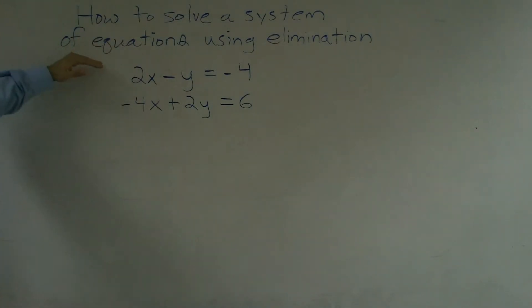All right, what I'd like to show you guys is how to solve a system of equations using elimination. On here we have two equations: 2x minus y equals negative 4, and negative 4x plus 2y equals 6.